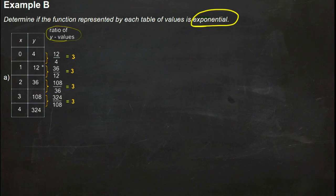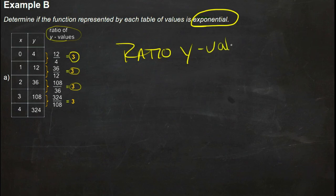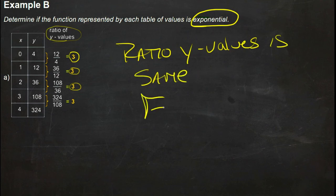In other words, 4 is 1/3 of 12, so 4 times 3 is 12. 12 times 3 is 36. 36 times 3 is 108, and 108 times 3 is 324. So if the ratio of your y values is the same, then you have an exponential model.